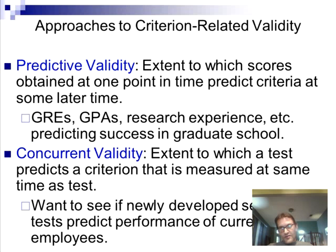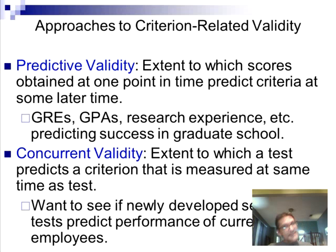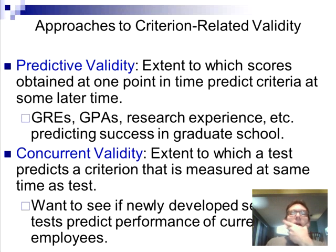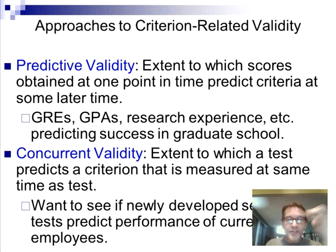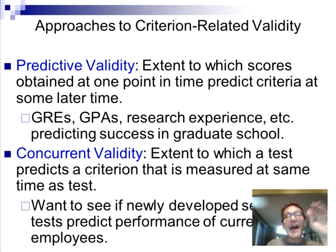The two different types of criterion-related validity are predictive and concurrent. Predictive validity: does my measure of smiles per hour predict how much happiness-related hormones you have in a week? Concurrent validity: does my measure of smiles per hour predict how much of those hormones you have right now? One is predicting the future; one is predicting the current.